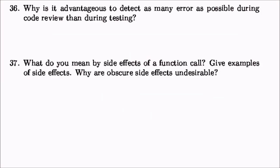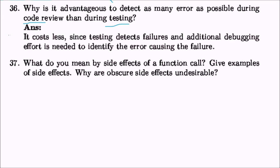Why is it advantageous to detect as many errors as possible during code review rather than during testing? First, it costs less — testing detects failures and then debugging effort is required to identify the causing error. If errors are caught during code review or inspection, the cost is much lower compared to testing and then going back to debug.